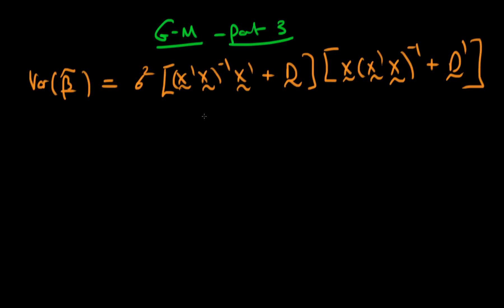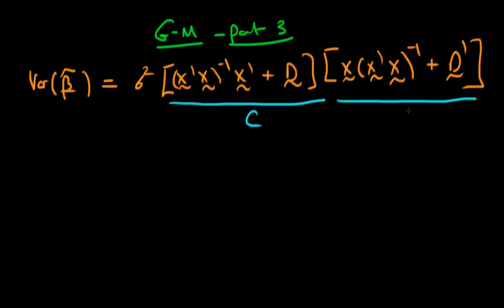Hi there, and welcome to the final part of our proof of the Gauss-Markov theorem in matrix form. At the end of the last video we had that the variance of beta tilde was equal to some matrix C times its transpose C primed, all pre-multiplied by sigma squared.